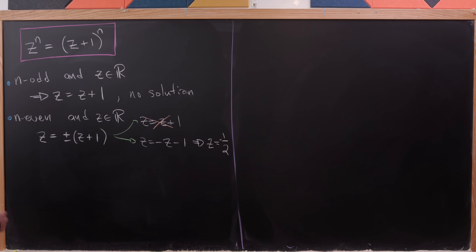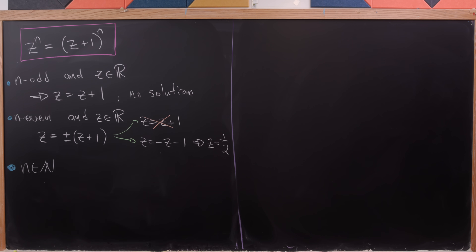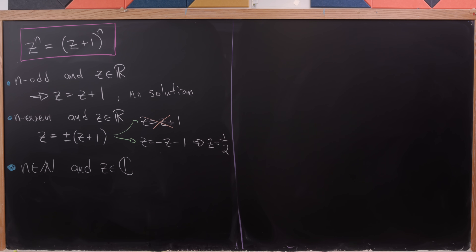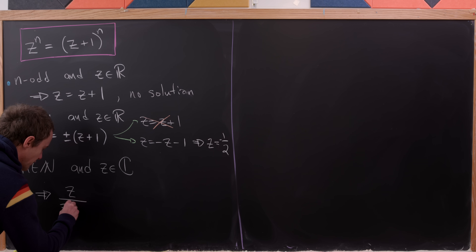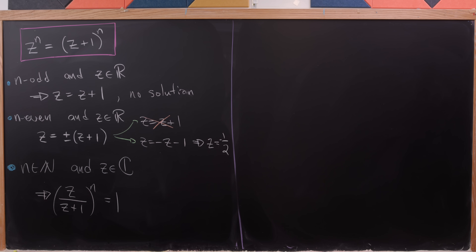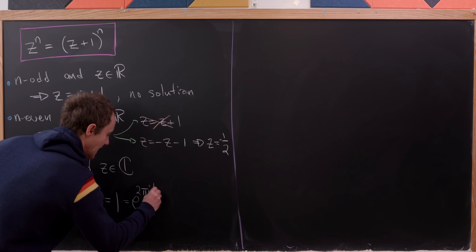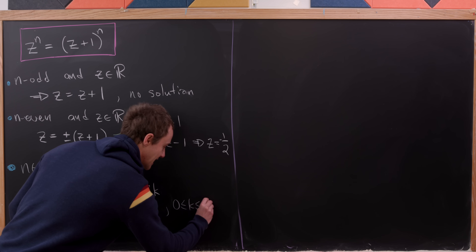What makes this more interesting is to consider solutions over the complex numbers. Let n be any natural number — we'll later see we really just need n greater than or equal to two. Solving over the complex numbers, I'm going to divide both sides by z plus one, so our equation is equivalent to z over z plus one, all to the nth power, equals one. I'm going to write one as e to the two pi i k, where k ranges from 0 to n minus 1.